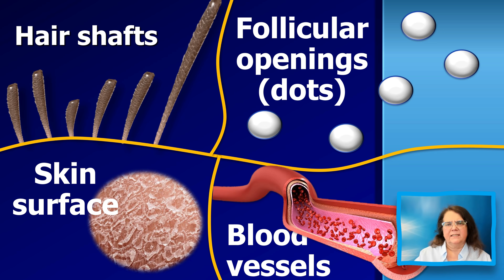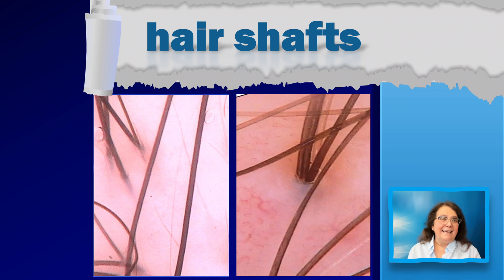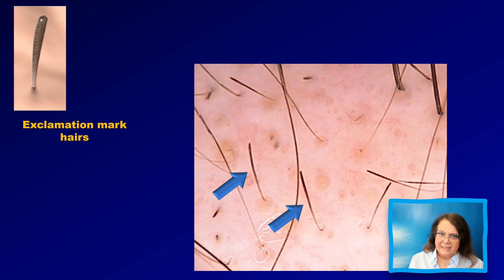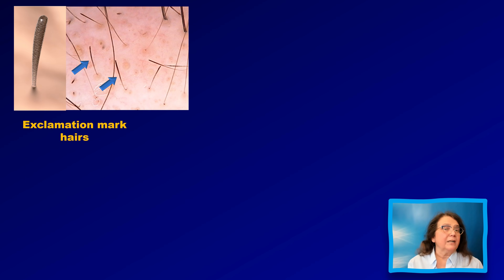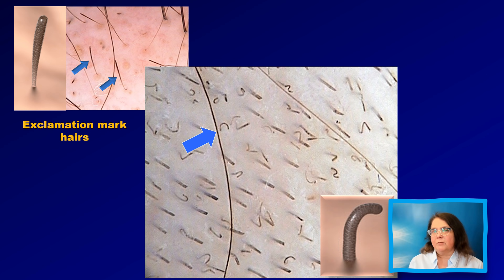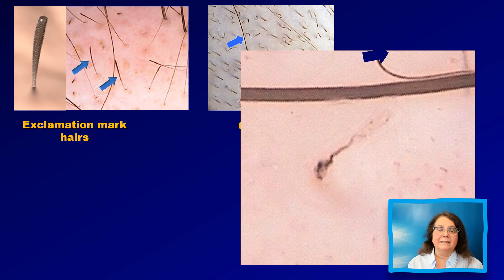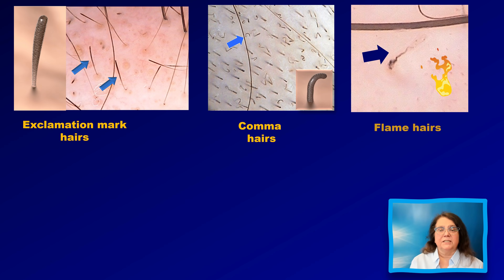In trichoscopy we evaluate different structures such as the hair shafts, the follicular openings, the skin surface elements, and the blood vessels. A normal hair shaft is uniform in shape and color. There are multiple hair shaft abnormalities — I will name three. First, exclamation mark hairs: thick at the distal part and thin at the base, most typical for alopecia areata. Second, comma hairs, shaped like a comma or a C, typical for tinea capitis. Third, flame hairs, associated with trichotillomania.